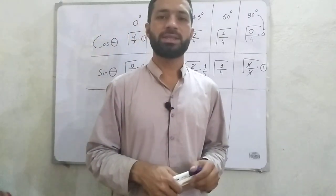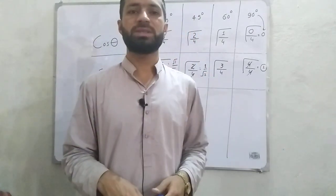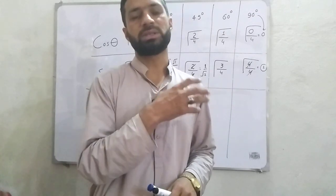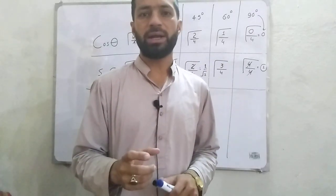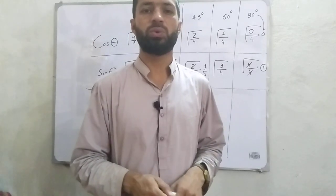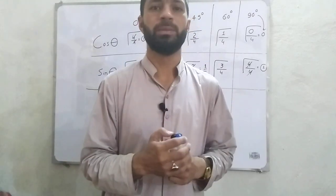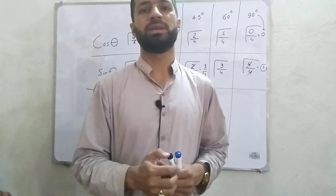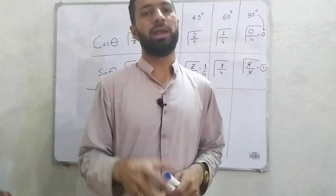In today's lecture we discussed how to calculate sin theta and cos theta without a calculator. There were three steps. In the first step, for cos theta we started writing from 4 to 0, and for sin theta we started from 0 to 4. In the second step, we divided all numbers by the maximum, which is 4. Finally, we took the square root and simplified. Hope it was informative. If you like this video, please subscribe to our channel, and I am going to start ETA MCQs on my channel in a day or two.